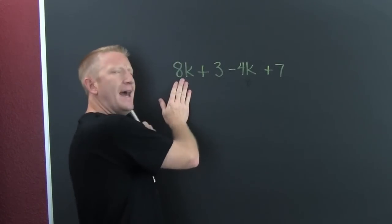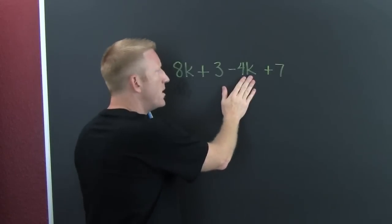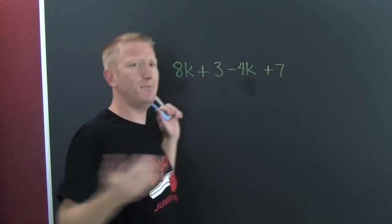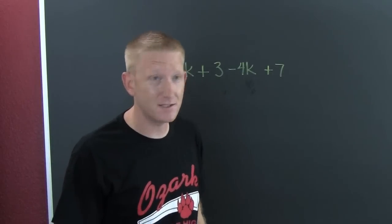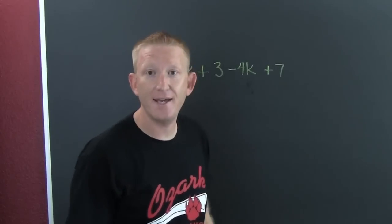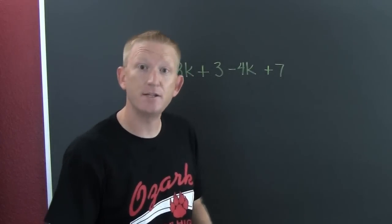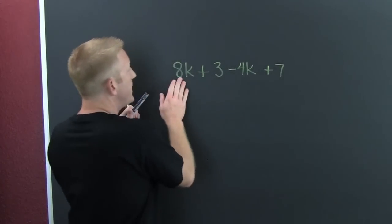So if you had 8ks and somebody came along and took 4ks from you, you'd be like, why are you taking my ks? Anyways, let's go ahead, gather, collect, and combine, and we'll find that if we had 8 and somebody took 4, then we would have 4ks.